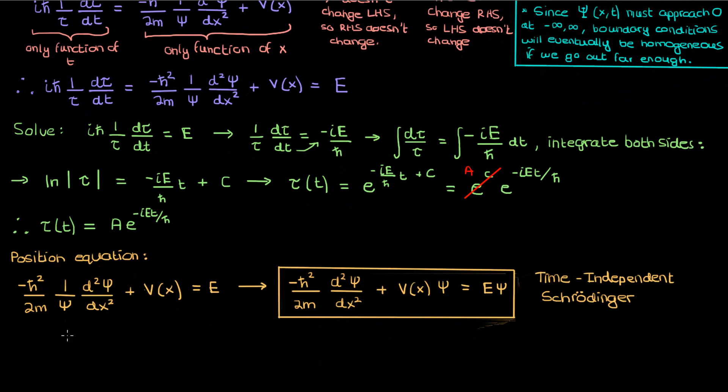Once we solve this time-independent Schrödinger and obtain a solution for small psi our overall wave function psi will be small psi of x times the exponential of negative i E over h bar times t. Of course the constant of integration A that I had earlier with the tau will be absorbed into the small psi which is why I haven't included it here.